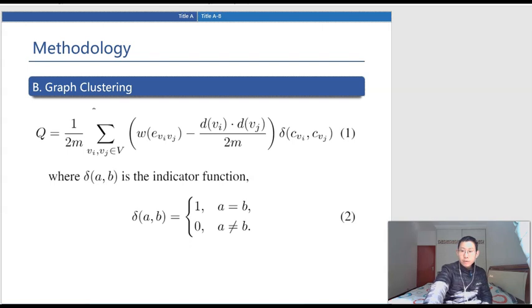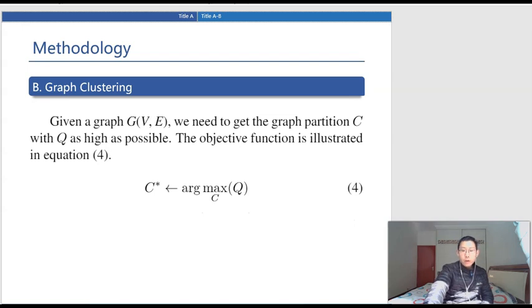The concept of modularity, noted as Q, is introduced to describe the aggregation effect. Modularity is the fraction of the edges that fall within the given groups minus the expected fraction if the edges were distributed at random. Networks with high modularity have dense connections between the nodes within communities, but sparse connections between nodes in different communities. Therefore, the formulation is that, given the graph G with the node set V and edge set E, we need to get the graph partition C with highest Q.